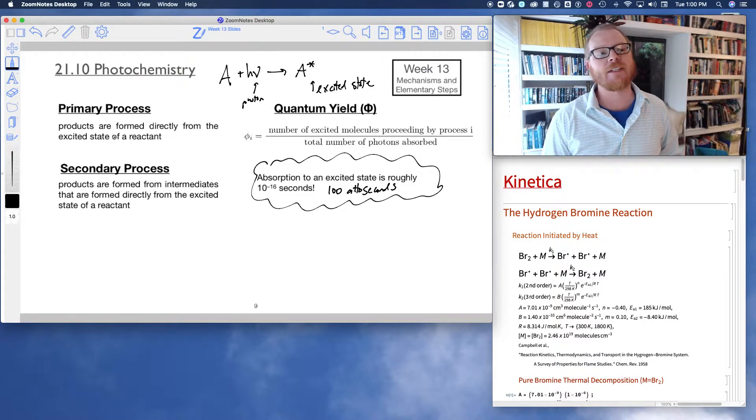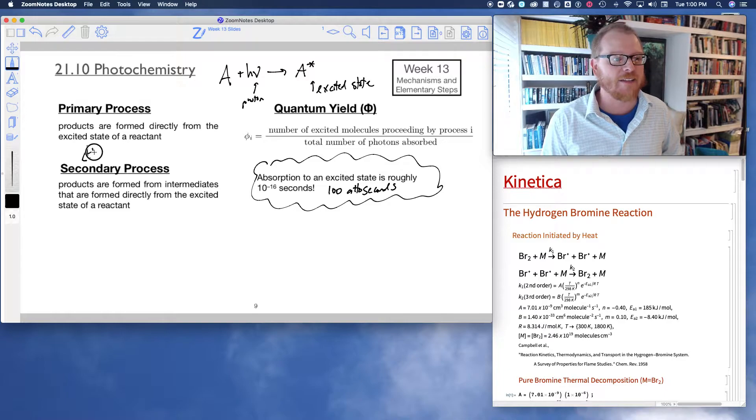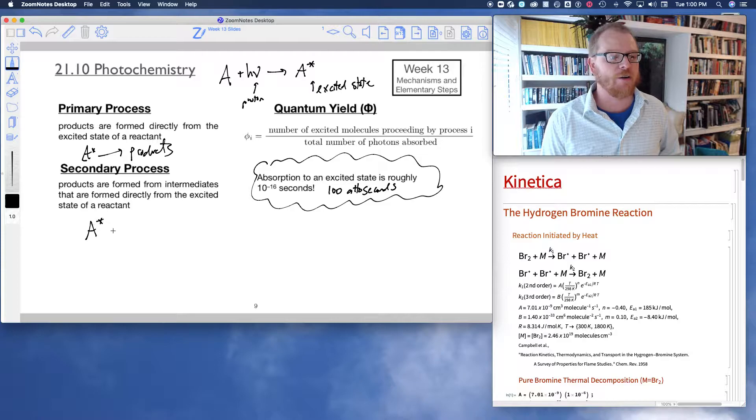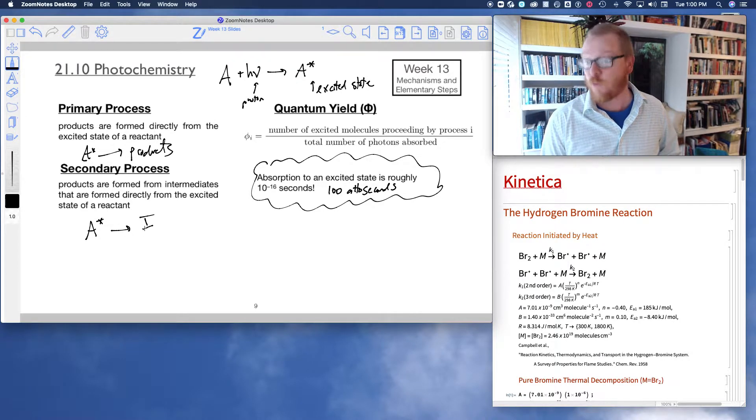So primary processes are products formed directly from the excited state of a reactant. So that would be now this excited state goes on to form products. Secondary processes are products that are formed from intermediates that are formed directly from the excited state of a reactant. So for example, in secondary photochemistry, A star might form some intermediate, and then that intermediate goes on to form a stable product.